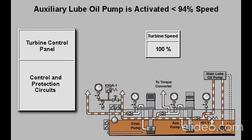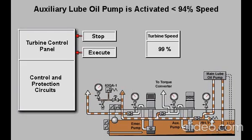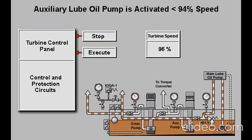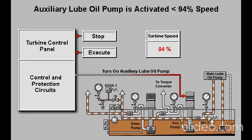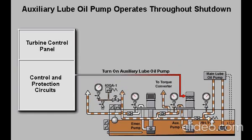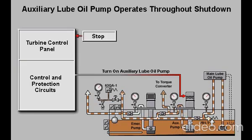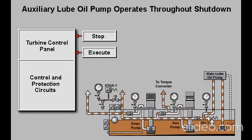Normally, turbine shutdown is initiated when the lead operator selects stop and execute on the operator interface of the turbine control panel. The turbine may also shut down automatically when the control and protection systems detect an unsafe operating condition. In either case, the control system will turn on the auxiliary lube oil pump when the turbine speed drops below 94% of operational speed. The auxiliary lube oil pump operates throughout the shutdown and cool-down periods and is shut off when the lead operator selects stop and execute once more.